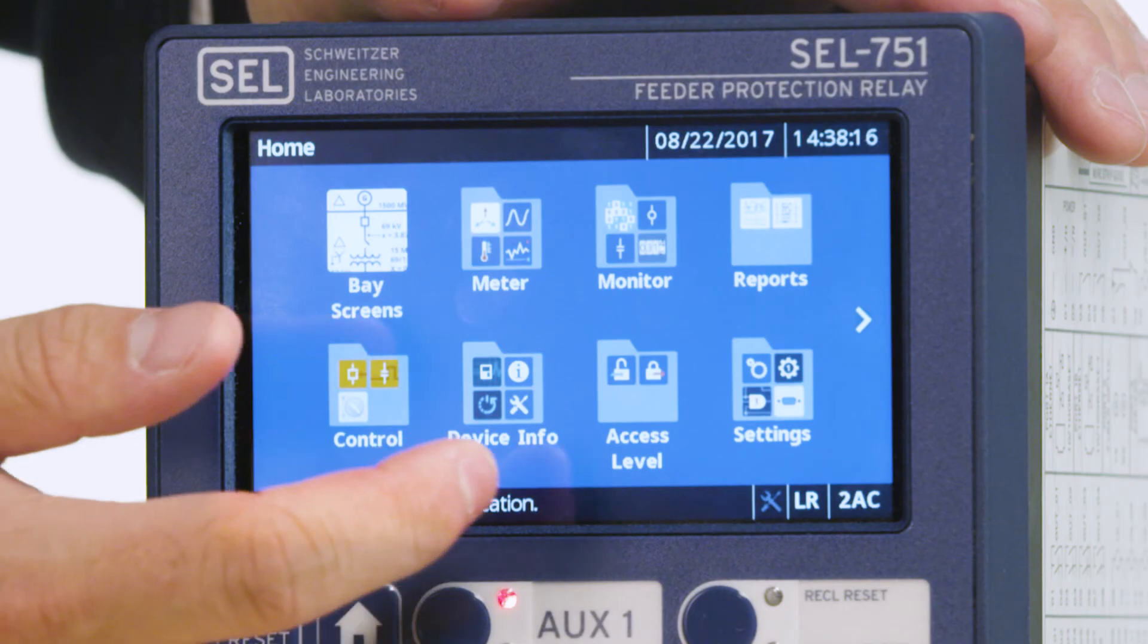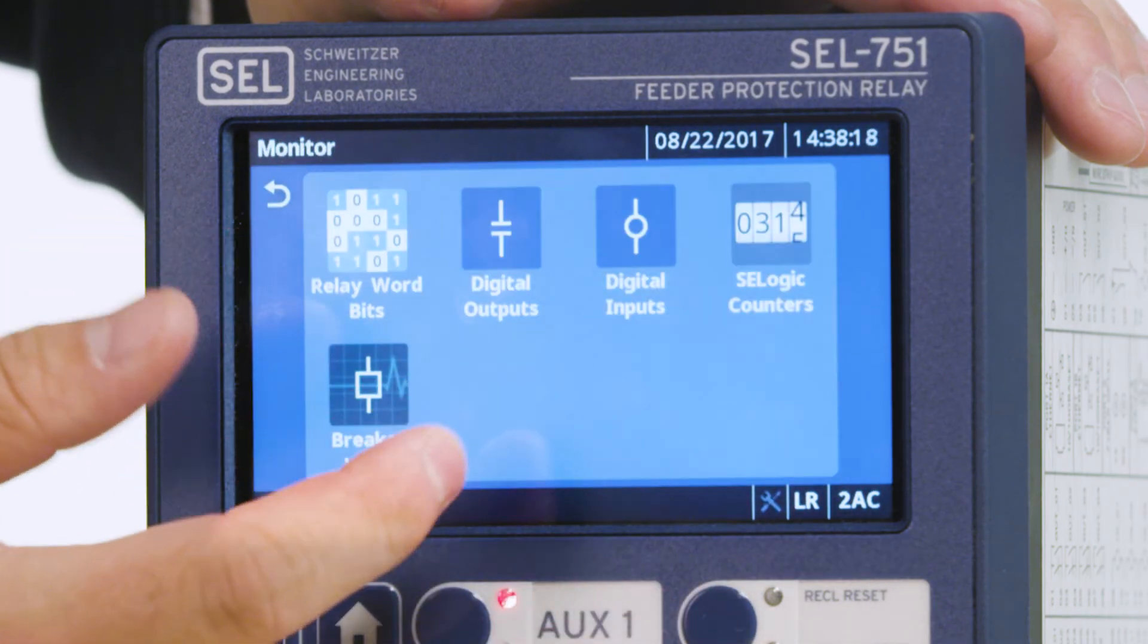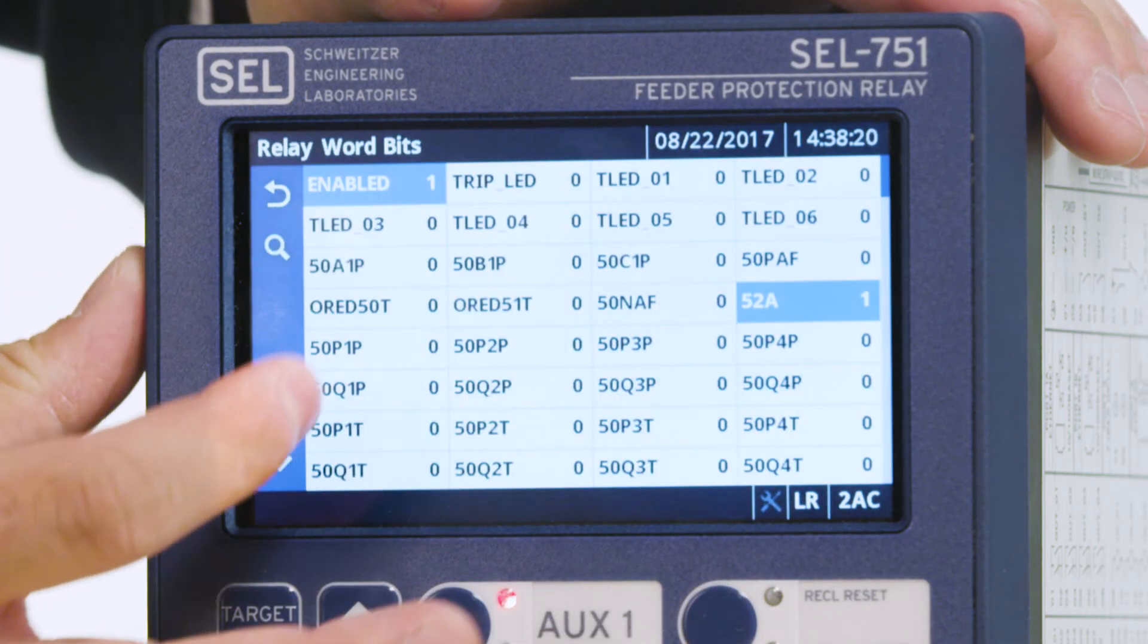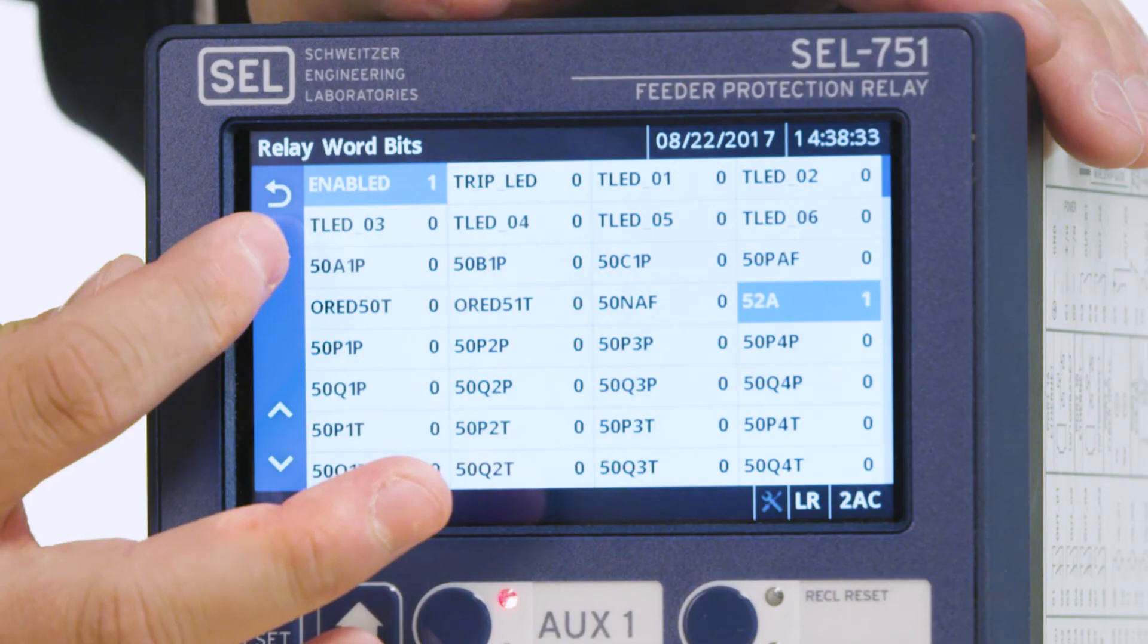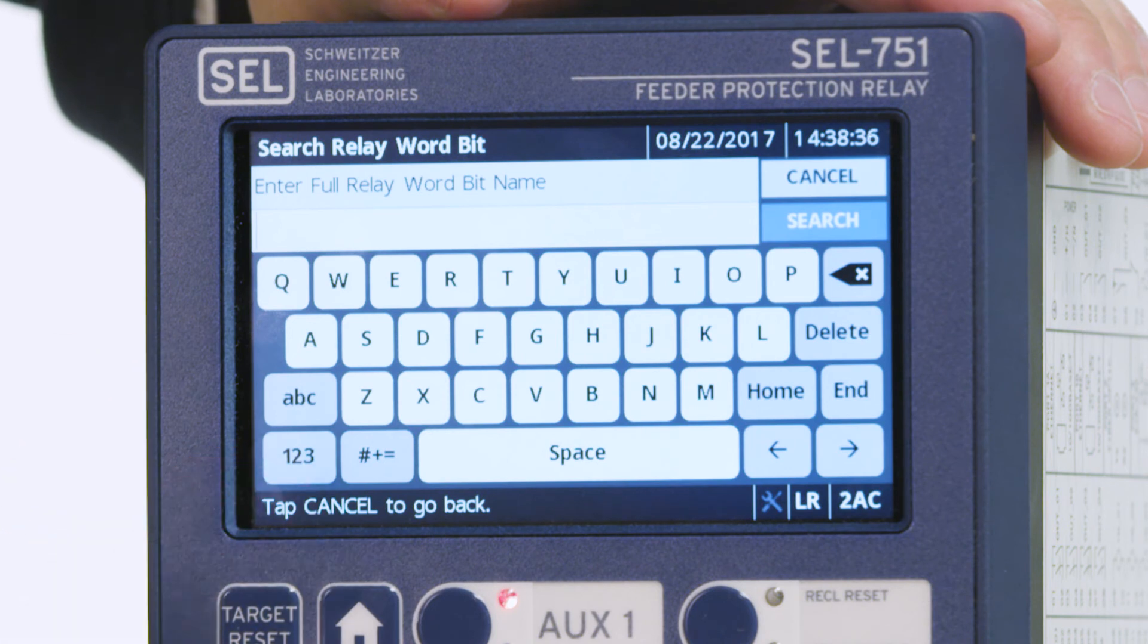The next application that we are going to look at is the RelayWordBits application, which can be found in the Monitor folder under the RelayWordBits application. Here, we can search for various RelayWordBits. Let's search for that same 52A contact that we just saw logged in the SER.